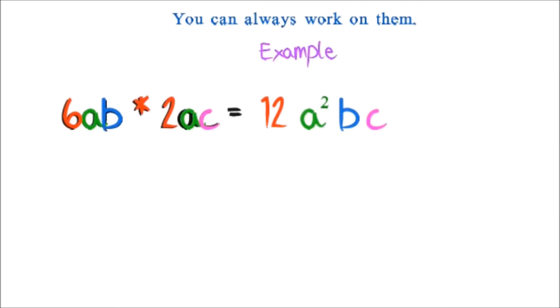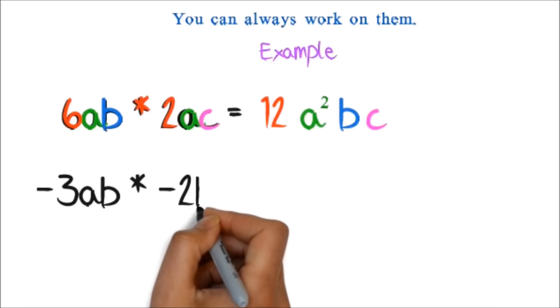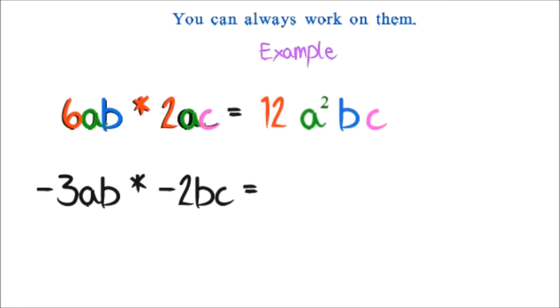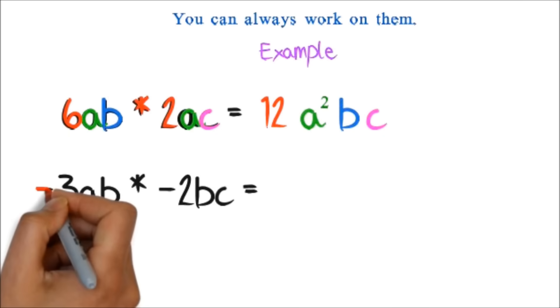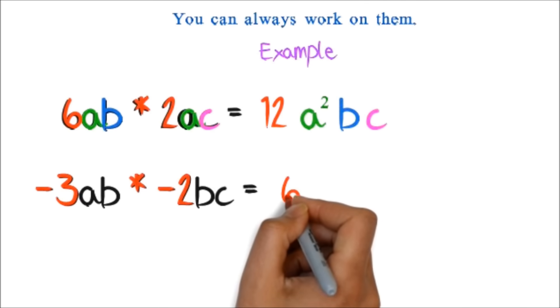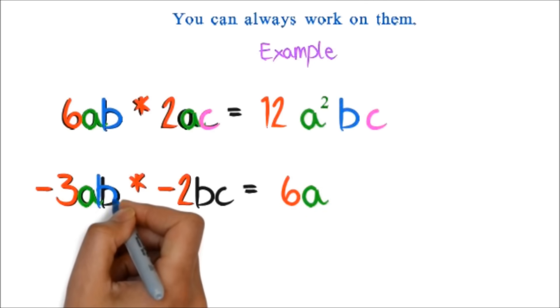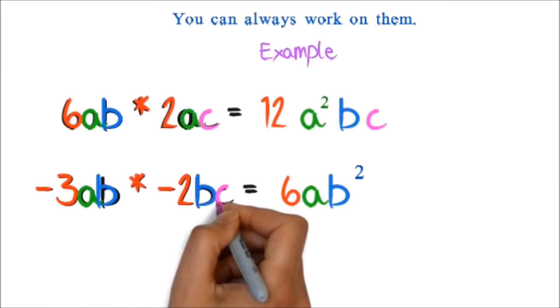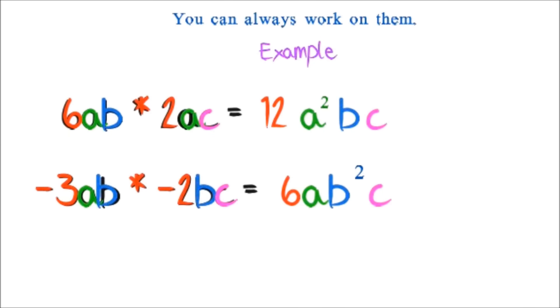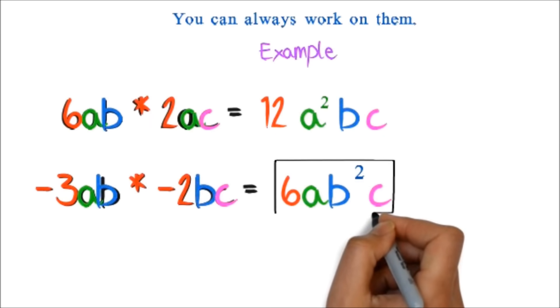Let's try these. Negative 3ab times negative 2bc. Here we multiply the negative 3 and negative 2. These are both negatives, so we have positive 6. Next, we look at the occurrence of the letters. The a occurs just once. The b occurs twice. And the c occurs once. So our final answer is 6ab squared c.